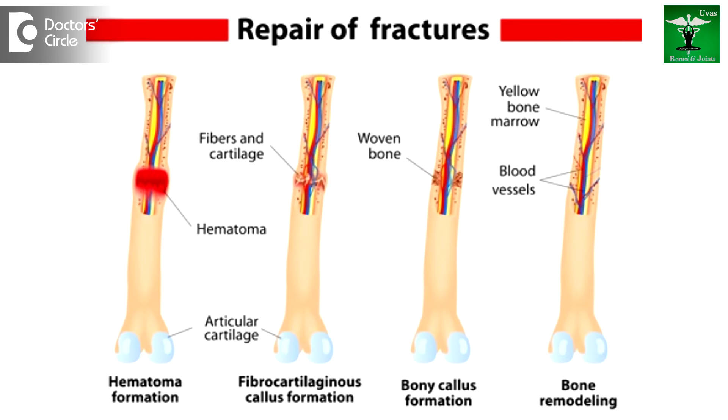Stage 2 of fracture healing is the reparative phase, where fibroblasts are laid into the fibrin formations from the inflammatory phase. Then the phase of resorption starts, where the bone edges are resolved by the body so that new fibrin can get a firm hold on the fracture ends.